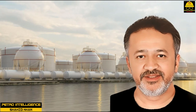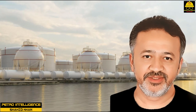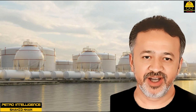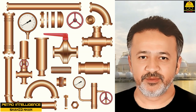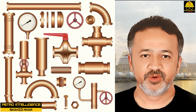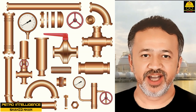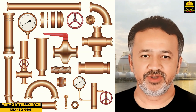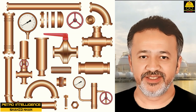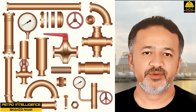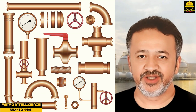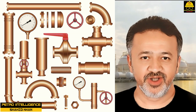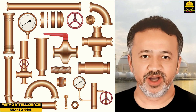Elbows, tees, flanges, valves, and other piping components are made to mate with screwed, flanged, and welded piping. These items are also made in various weights and are constructed for certain pressure and temperature ratings.